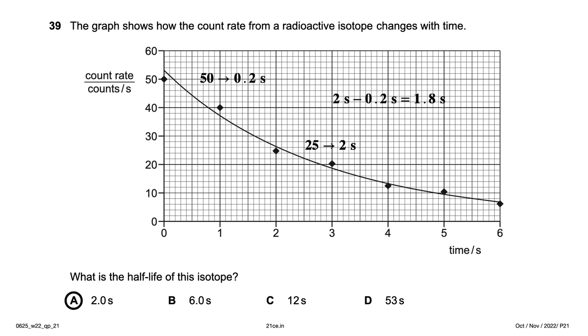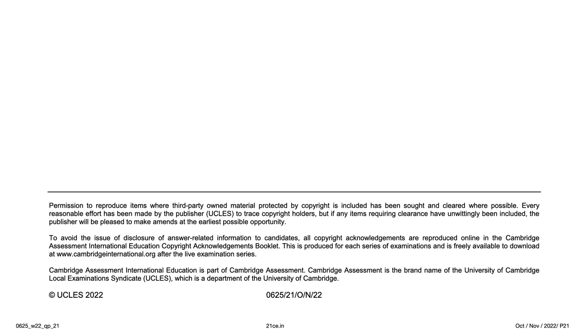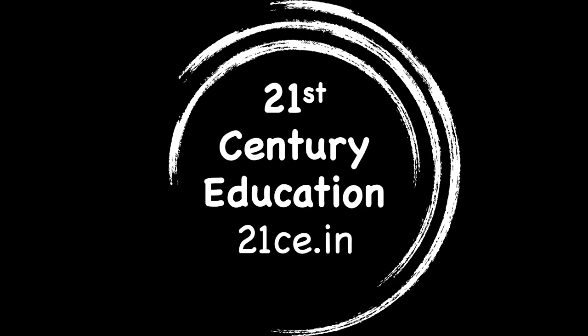What is the nature of alpha emission? Alpha emission is not an electromagnetic wave (gamma is). It is not an uncharged particle either. Alpha is a positively charged particle — option C is the right answer. That completes the paper — 21st Century Education, 21ce.in.